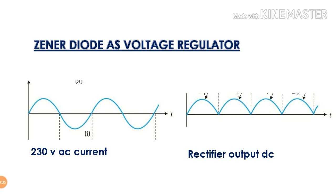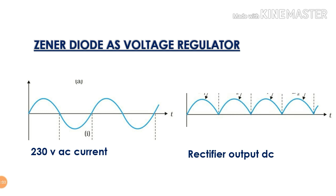This Zener diode will act as a voltage regulator. What is a Zener voltage regulator? This is the irregular voltage, and this is constant.